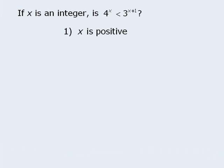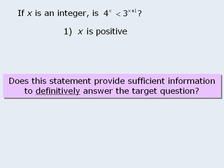In this question, we are told that x is an integer, and we must determine whether 4 to the power of x is less than 3 to the power of x plus 1. Statement 1 tells us that x is positive. Does this statement provide sufficient information to answer the target question? In other words, does knowing that x is positive provide enough information to determine whether or not 4 to the power of x is less than 3 to the power of x plus 1?